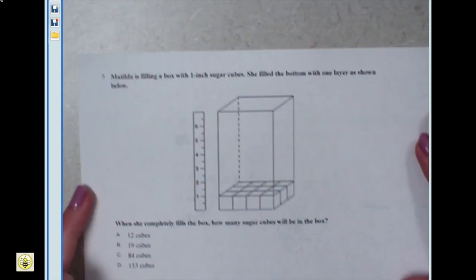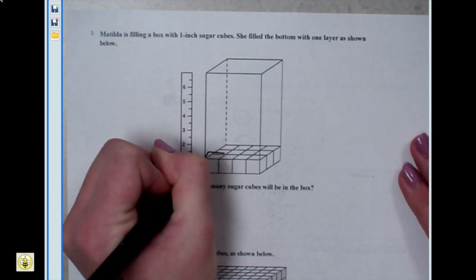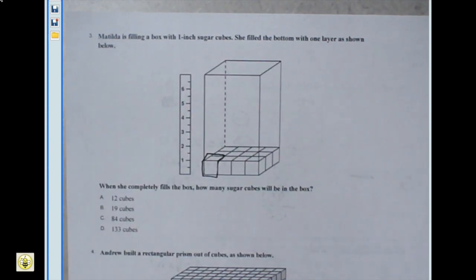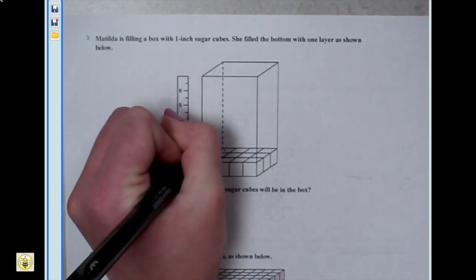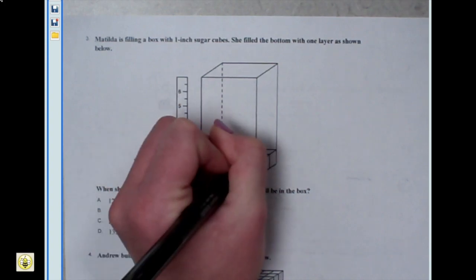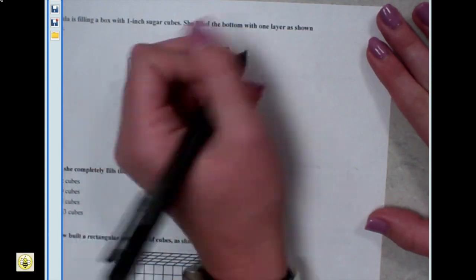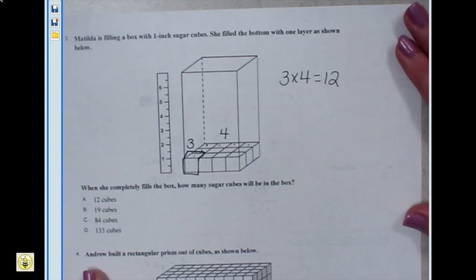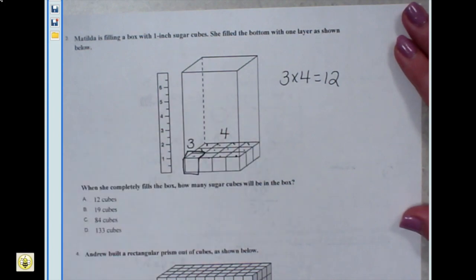Let's look at number three. It says Matilda is filling a box with one-inch sugar cubes, meaning each cube equals one inch. She filled the bottom with one layer as shown. There are three cubes along the length and four along the width, so the area of the bottom is three times four, which is 12. Counting the cubes in the bottom layer confirms there are 12 sugar cubes on the bottom layer of the rectangular prism.